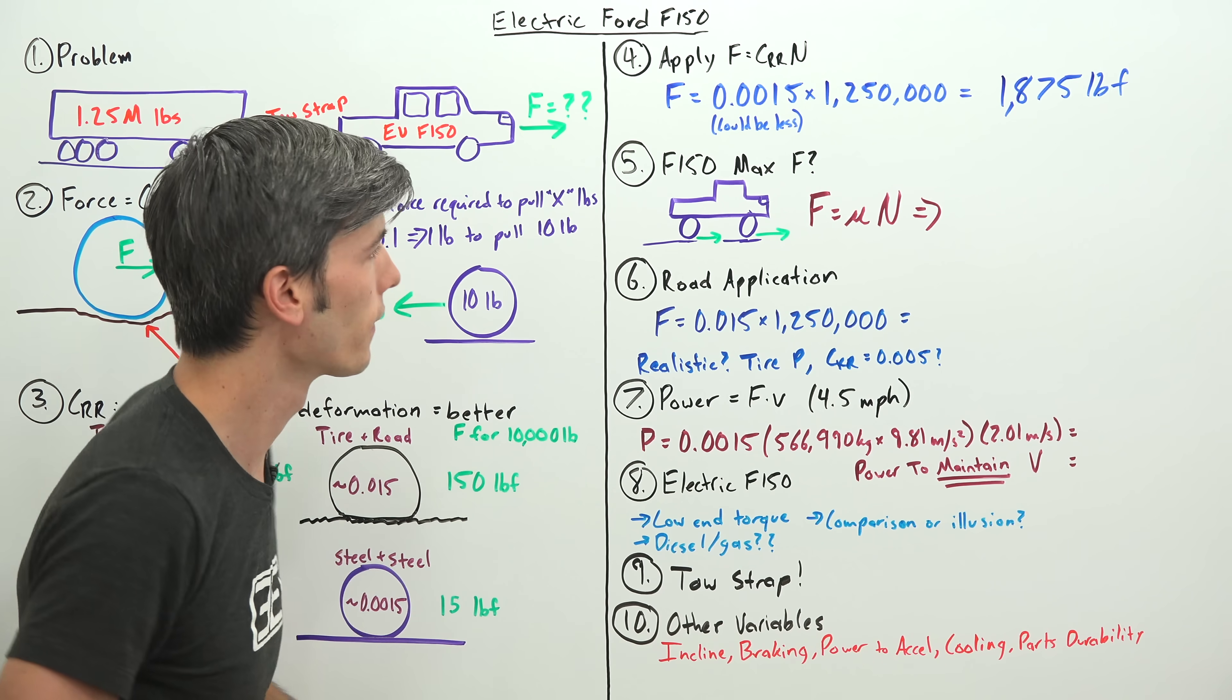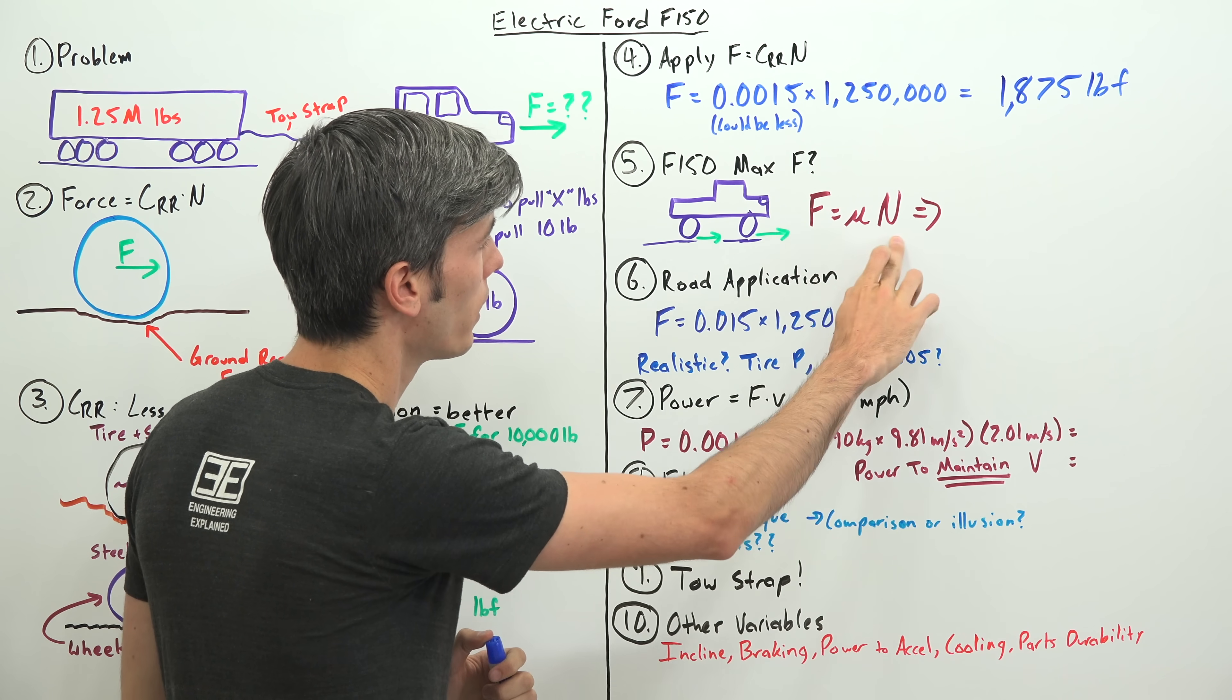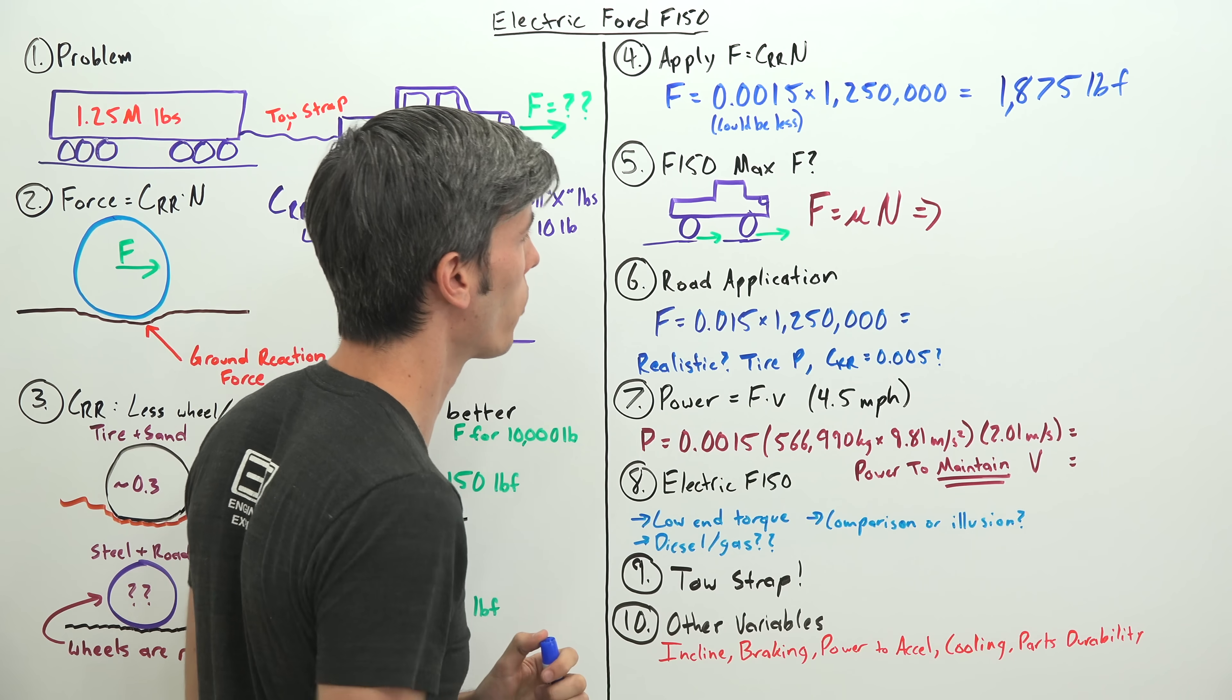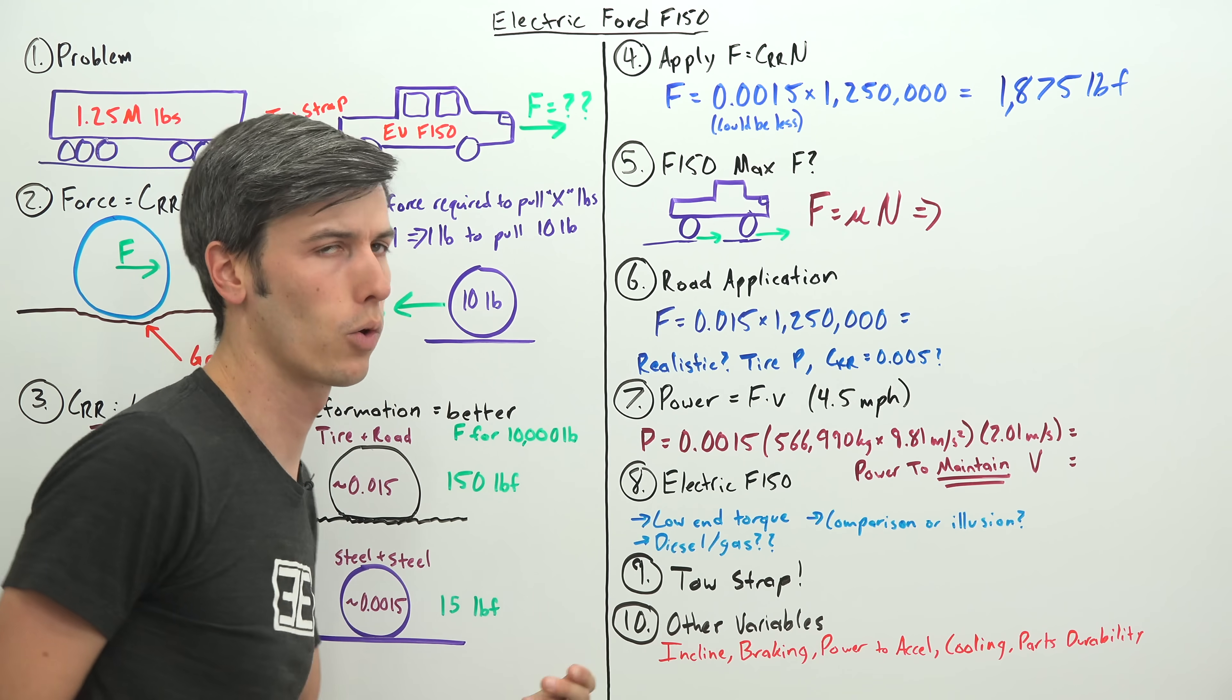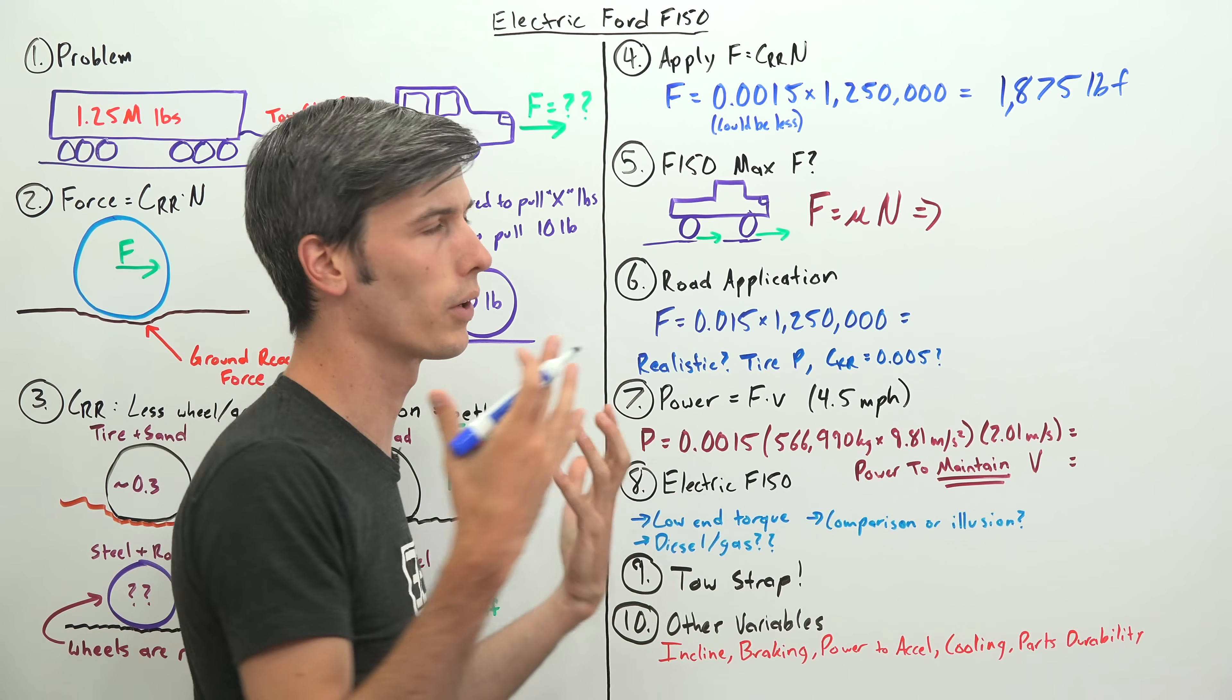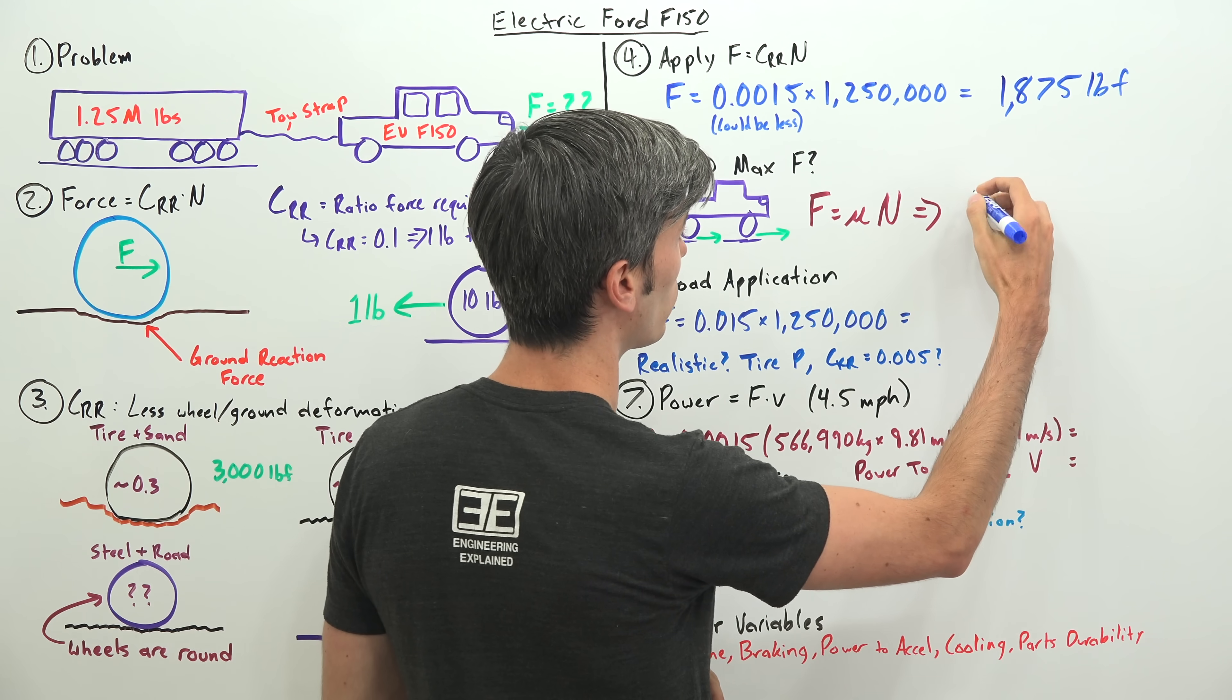So what is the maximum force that this electric F-150 can pull? Based on traction alone, we're going to look at this equation. The maximum force this truck can move forward with equals the frictional coefficient of the tires multiplied by the normal force. We're going to assume it has enough power, I have no doubt that it does, and you can always use gears if needed to have more torque at the ground.